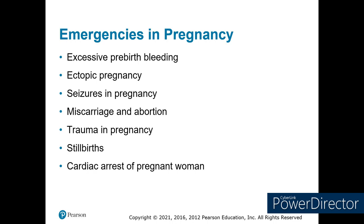Other emergencies: pre-birth bleeding — control it and get to the hospital. Ectopic pregnancy — lower abdominal pain in a woman of childbearing age with possibility of pregnancy. Seizures during pregnancy, or eclampsia — control the seizure and care for mom. Miscarriages and abortions. Trauma in pregnancy — remember, save mom first to save the baby. Stillbirths. And cardiac arrest in pregnant women.